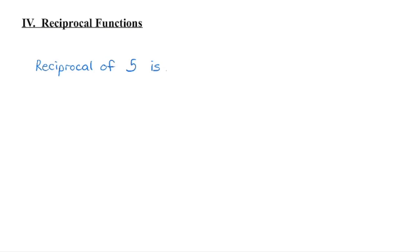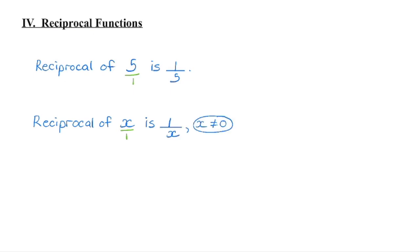We are going to begin reciprocal functions by looking at what the word reciprocal means. If I ask you what is the reciprocal of 5, we know that 5 has a denominator of 1. If we flip that around we get the reciprocal: one fifth. So if I say what's the reciprocal of x, again x has a denominator of 1. Reciprocal means we flip that around and get 1 over x. However, we know that we can't divide by 0, so x cannot be 0, otherwise this is undefined.